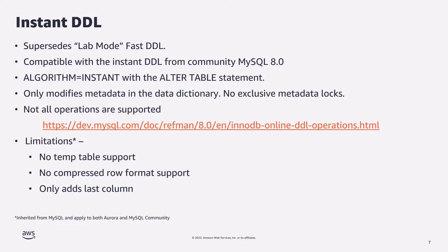The online operation reads less data into the buffer pool because it only makes metadata changes. All of these improvements help your database become more scalable without additional hardware — queries have better throughput whenever supported instant operations are used. There are limitations: you cannot use compressed row format or temp tables when adding a new column, and new columns are only added at the end of the table. But Instant DDL is one of the most desirable features for our customers and is now available with Aurora MySQL 3.